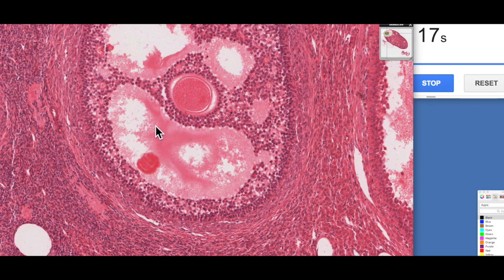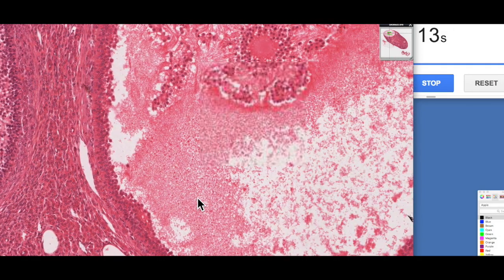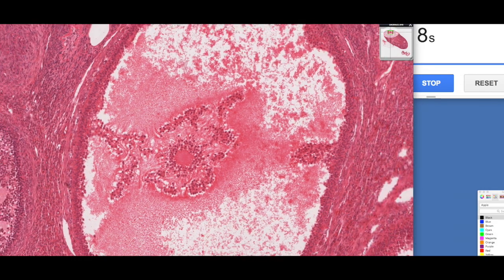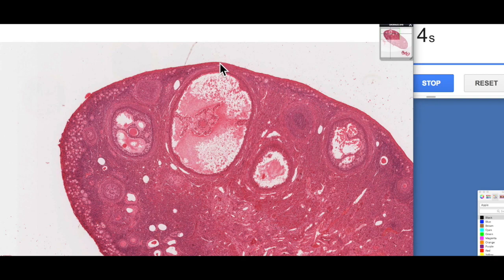They continue to grow, secrete lots and lots of this antral fluid. And then this forms this larger structure, which is known as a pre-ovulatory follicle or a graafian follicle.